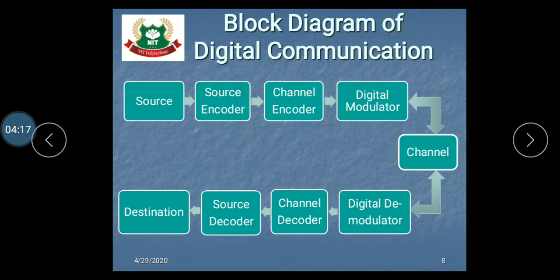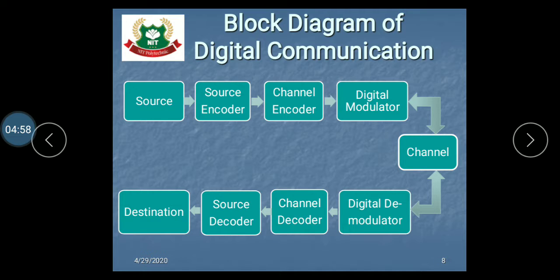The process of converting an analog signal to a digital signal is called sampling. After that, we need a high-frequency signal to pass, so we use a modulator to increase the strength of that signal. After modulation, the output of the digital modulator is 0s and 1s — the signal is in the form of 0s and 1s. This signal is then passed through a channel, which may be an optical cable or any type of cable. This is the transmitter side.